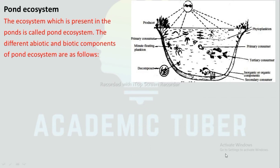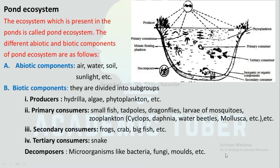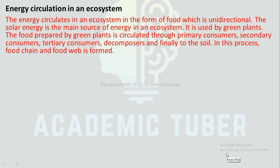Pond ecosystem: The ecosystem which is present in a pond is called a pond ecosystem. Abiotic components include air, water, soil, sunlight, etc. Biotic components include producers such as Hydrilla, algae, and phytoplankton; primary consumers such as small fish, dragonfly larvae, mosquito larvae, and zooplankton like Cyclops and Daphnia; and secondary consumers such as frogs, crabs, and big fish.